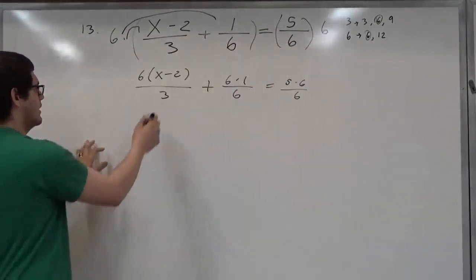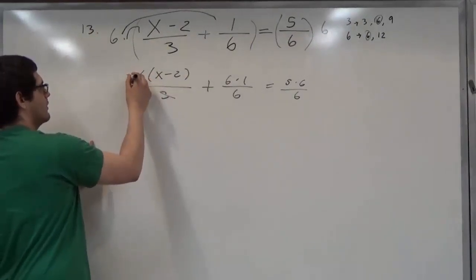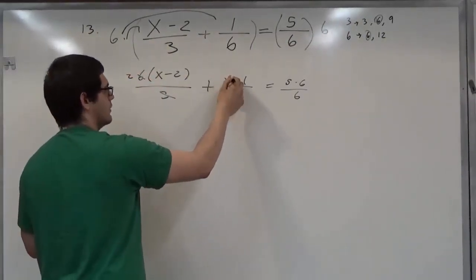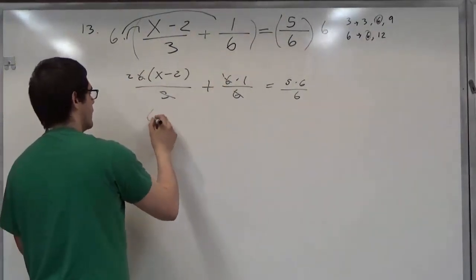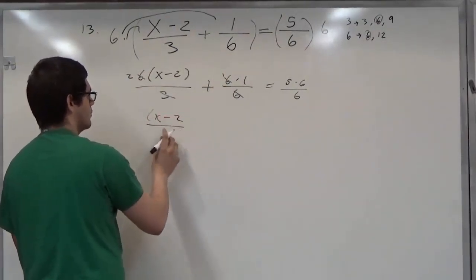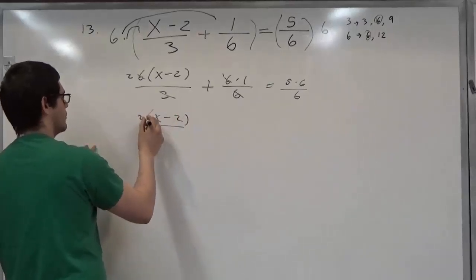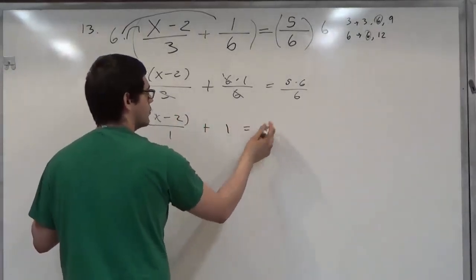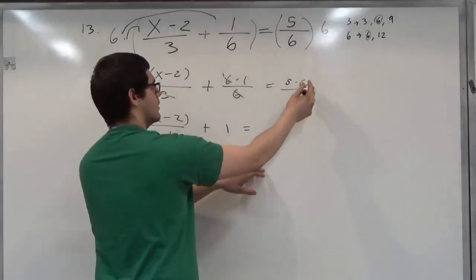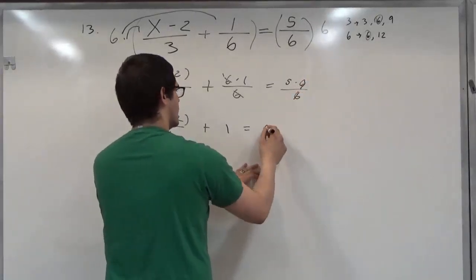Here our 6 and 3 can cancel, leaving us a 2 at the top. Our 6 and 6 here can cancel, leaving us a 1 at the top. So we have 2 times (x minus 2) over 1 plus 1 equals... I apologize, here our 6 and 6 also cancel, leaving us 5.